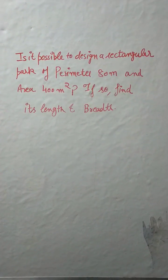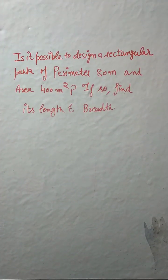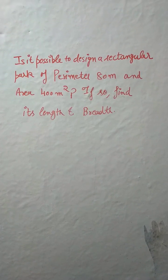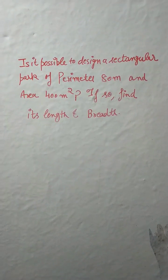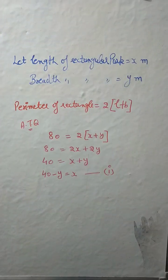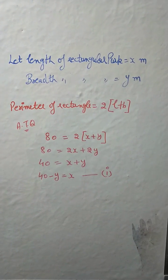Hello students, now here is a new question: Is it possible to design a rectangular park of perimeter 80 meters and area 400 square meters? If so, find its length and breadth. Now let length of rectangular park be x meters and breadth be y meters.